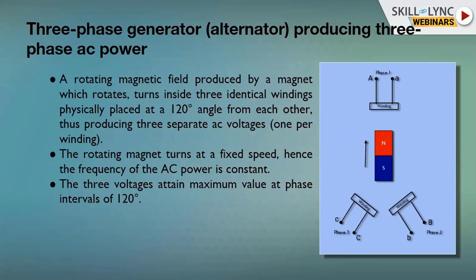The three windings form the stator — the stationary part that does not rotate, and which is also very heavy. A rotor is placed inside. A DC voltage is supplied to the rotor to develop a north pole and a south pole, producing flux. This flux cuts across the stationary stator conductors, inducing an EMF in all three windings.